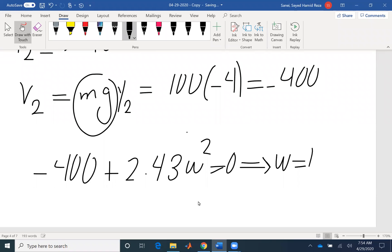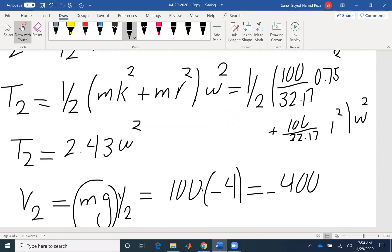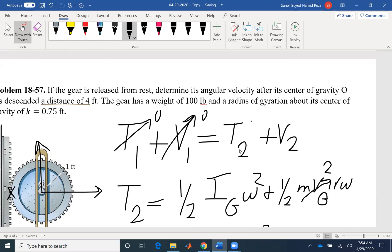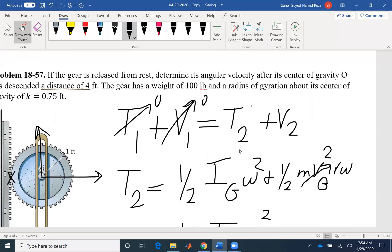So omega would be 12.84 radian per second. So for this problem, we did not have any initial energy. We lost some sort of energy and then gained another sort of energy, so the overall was zero.